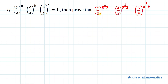(y/z) to the power 1/(b minus c) equals (z/x) to the power 1/(c minus a) equals (x/y) to the power 1/(a minus b). So here we have a given equation from which we are asked to prove this result. Without any delay, let's start the solution.